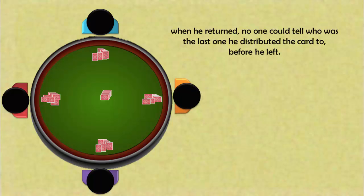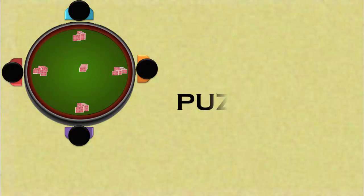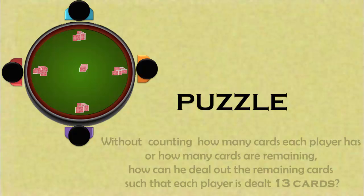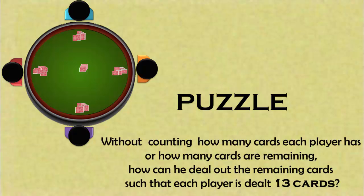When he returned, no one could tell who was the last one he distributed the card to. Without counting how many cards each player has or how many cards are remaining, how can he deal out the remaining cards such that each player is dealt 13 cards?